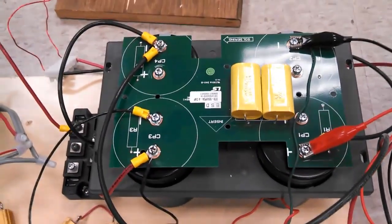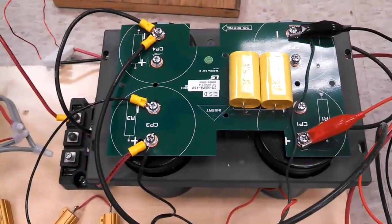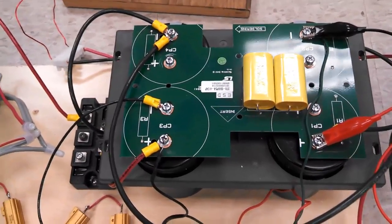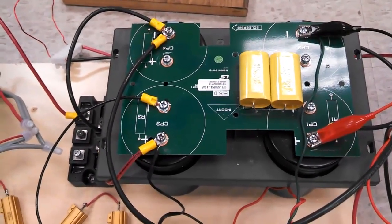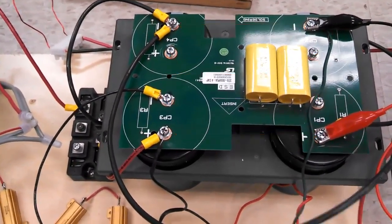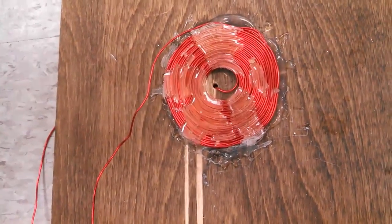It's four capacitors hooked in a series parallel combination to double our voltage and still keep the same capacitance as one capacitor. This is our coil. We've got about 100 turns of wire there.